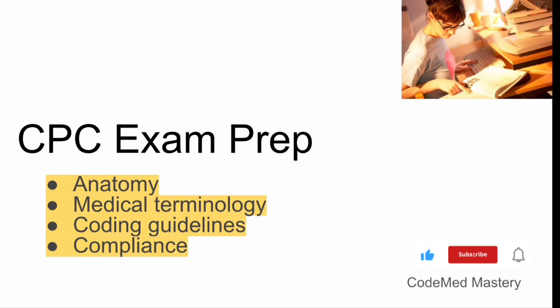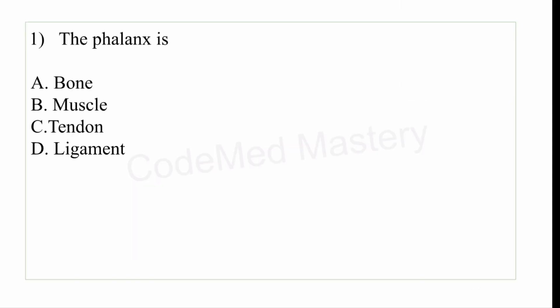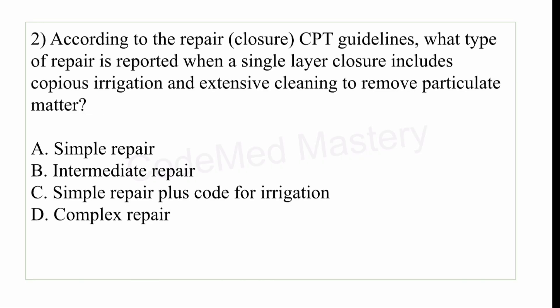Don't forget to hit the like button, share this video, and subscribe to my channel. The first question: the phalanx is — option A: bone, option B: muscle, option C: tendon, option D: ligament. The right answer is option A, bone. Phalanx refers to any of the bones in the fingers or toes.